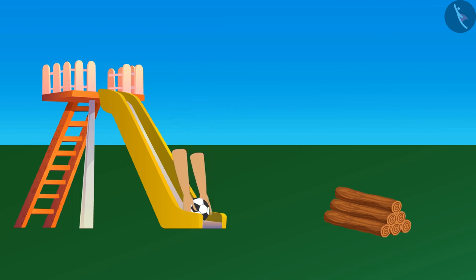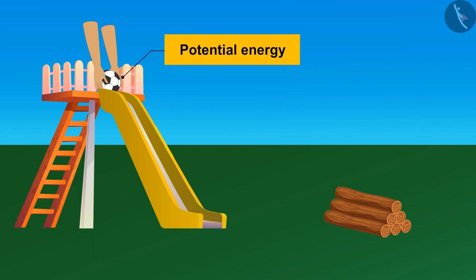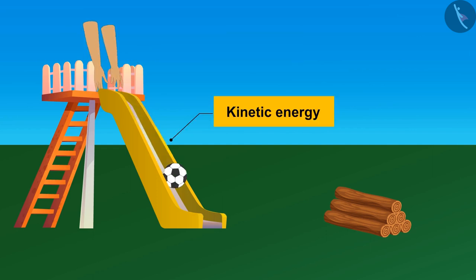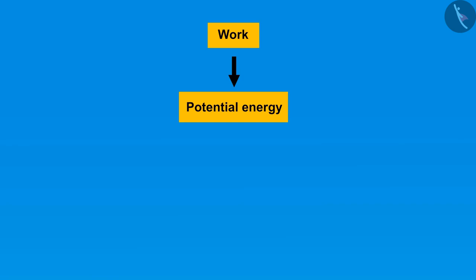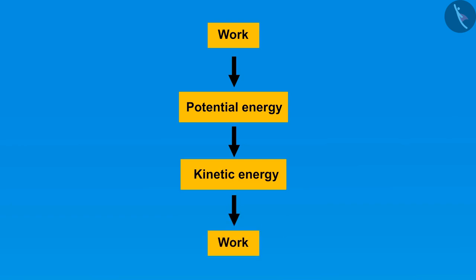Let's take an example of potential and kinetic energy. Some work is done to put a ball on the top of a slide. Due to this work done, a difference in height is obtained, which gives the ball some potential energy. If we push the ball a bit, the potential energy gets converted into kinetic energy. If the ball collides with a bunch of sticks and the sticks fall apart, the kinetic energy of the ball has done work on the sticks to knock them apart.